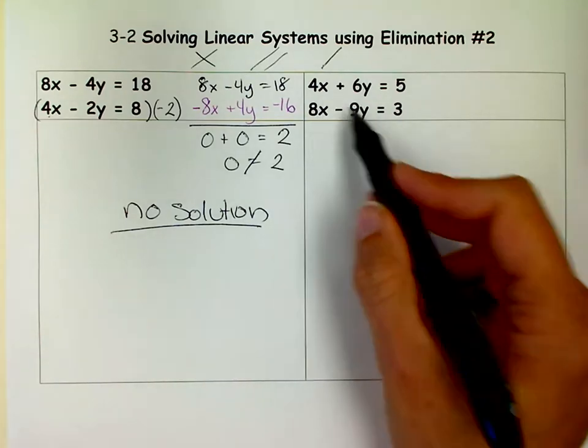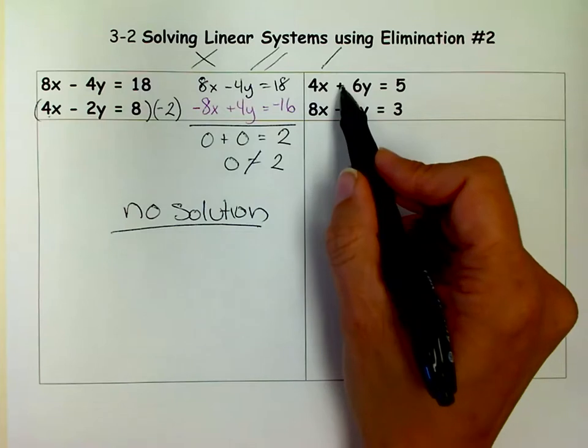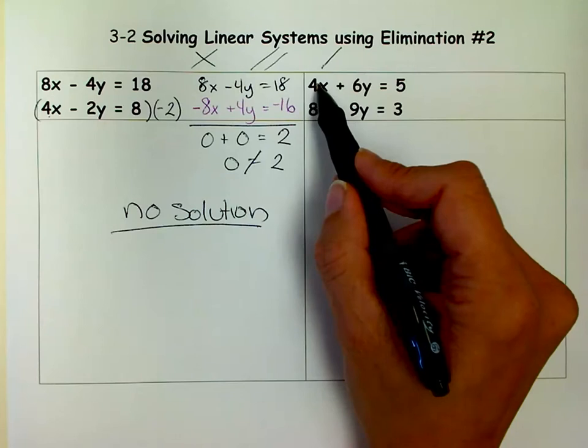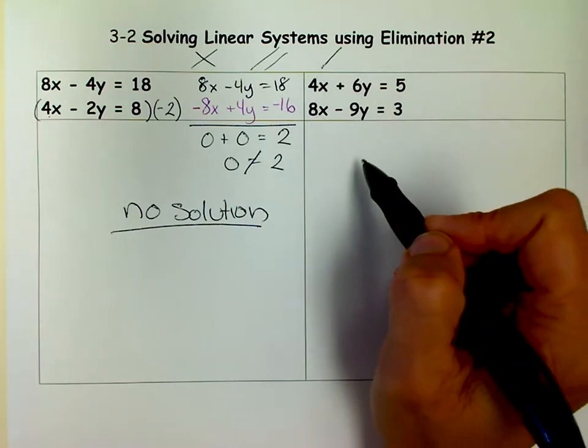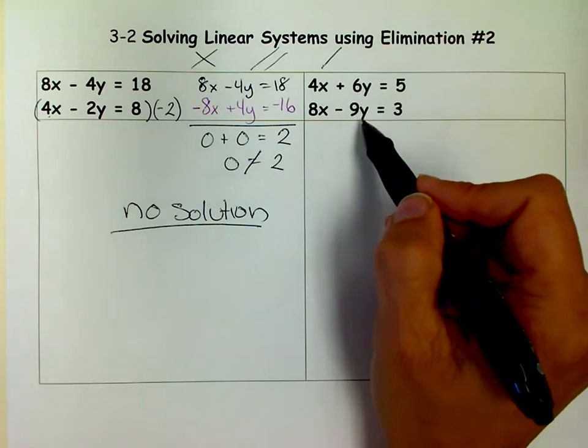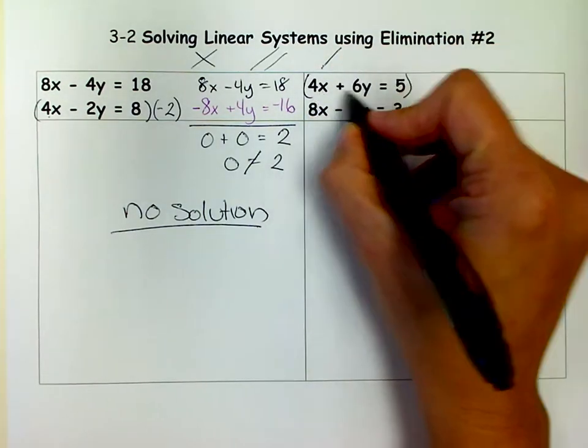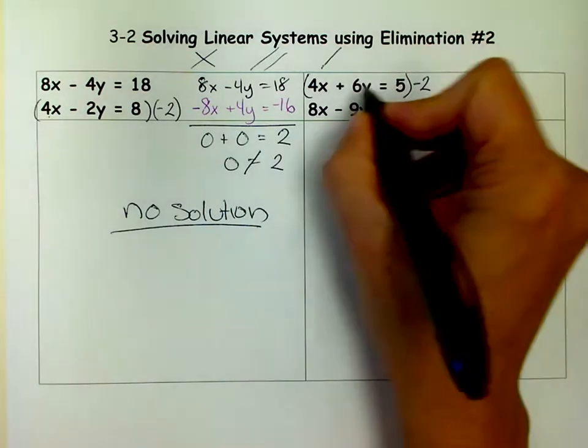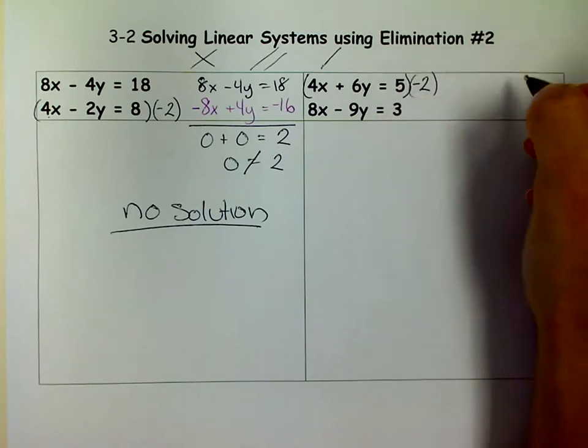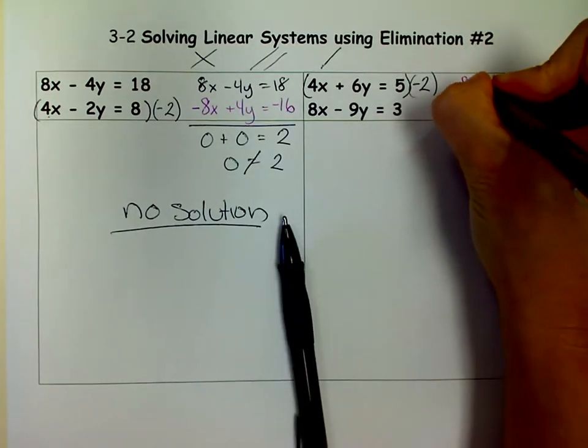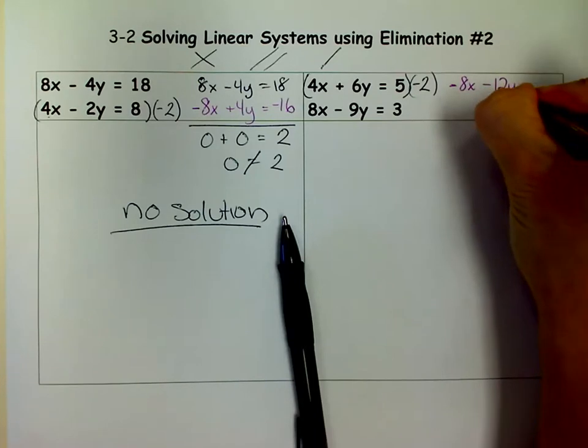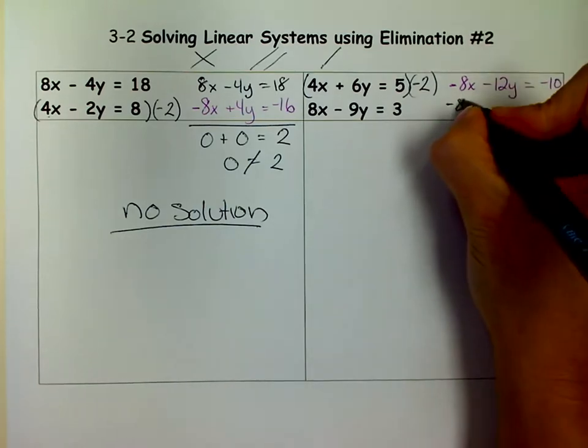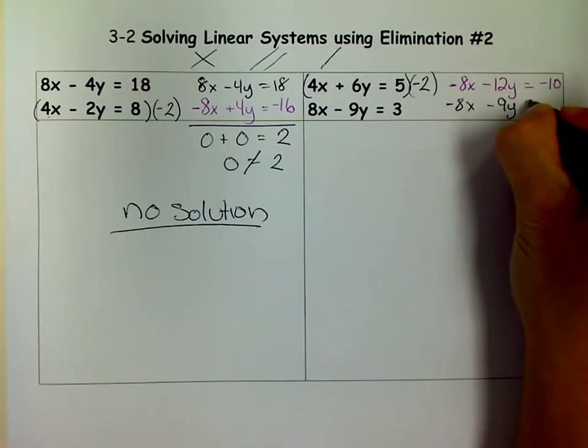Moving on to this one. Which one do I want to eliminate? Well, since this one has a negative and this one has a positive, I'm just going to choose the y's. It really doesn't matter. I could multiply this one by a negative 2. Actually, that would be easier because if I got rid of my y's, I'd have to multiply both equations. Let's do this one because you just have to multiply it by a negative 2. So let's multiply that whole equation by a negative 2.